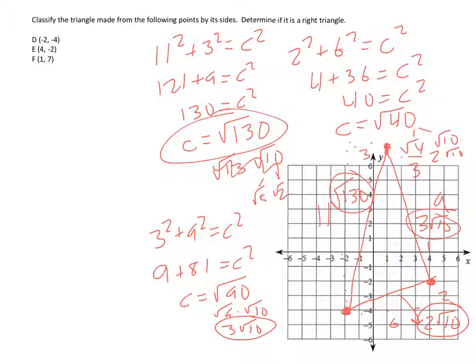These are clearly all different lengths. So once again, we have a scalene triangle. If any of them are the same, we have isosceles. If all 3 are the same, it's equilateral.